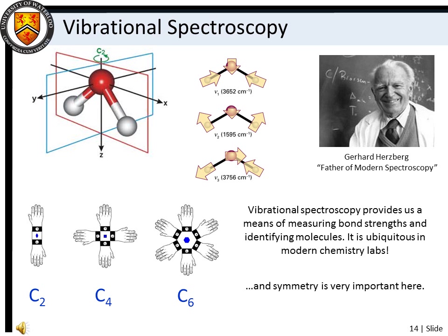Vibrational or infrared spectroscopy is ubiquitous in modern chemistry laboratories. It facilitates chemical identification and provides a means of measuring bond strengths. When we discuss vibrational spectroscopy, we will spend some time talking about symmetry as it applies to molecular systems. You will see that symmetry plays an important role in how we classify molecules, and it has important bearing on which spectroscopic transitions occur and which do not.